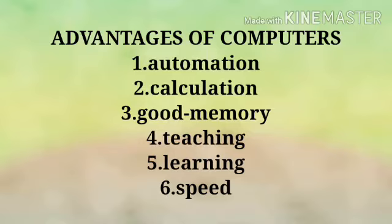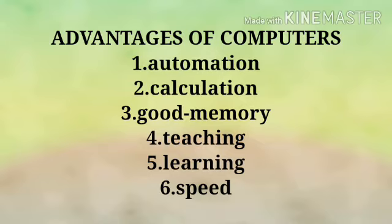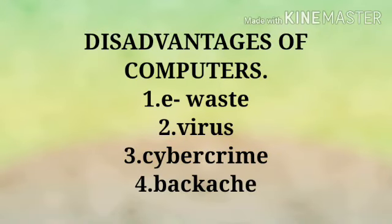Number three is good memory. Number four is teaching — computers are used to teach students in schools and colleges. Number five is learning — computers store a lot of information which is useful to students; students use the internet to learn about many things. Number six is speed — computers can work very fast.